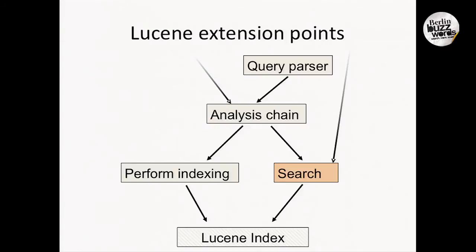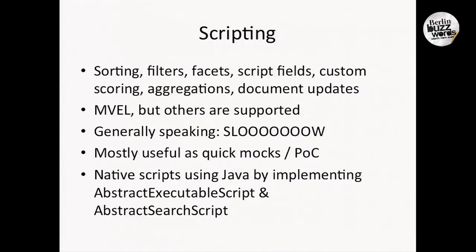Going back to the Lucene diagram - we just talked about the analysis chain. Once we've constructed a query out of a query string or whatever other query that went through the analysis chain, we are going to perform the actual search using that query object internally in Lucene. This is probably where most of the extension points are. Let's start with scripting. You can issue a lot of queries, have filters, have custom scoring, do aggregations, a lot of that. But you might get to a point where your model doesn't allow you to do exactly what you want, where you need custom scoring or custom filtering.